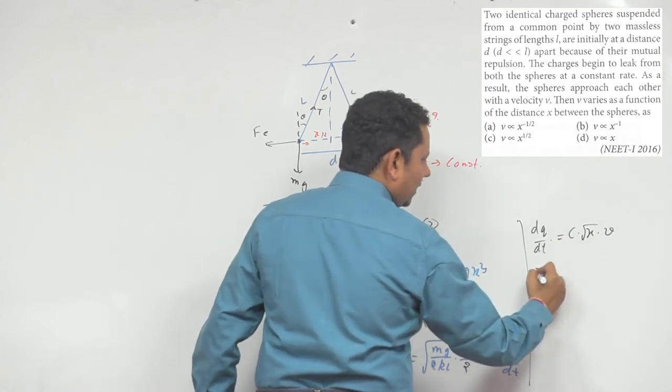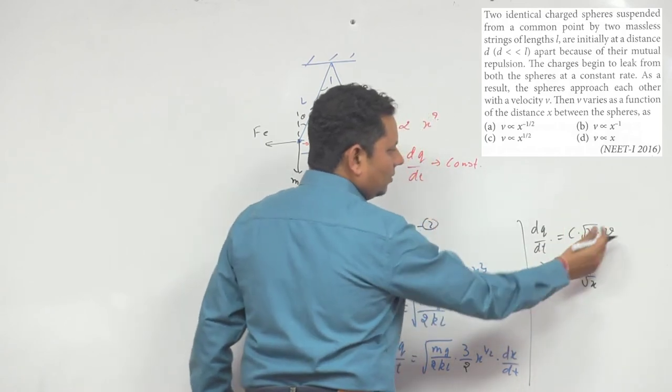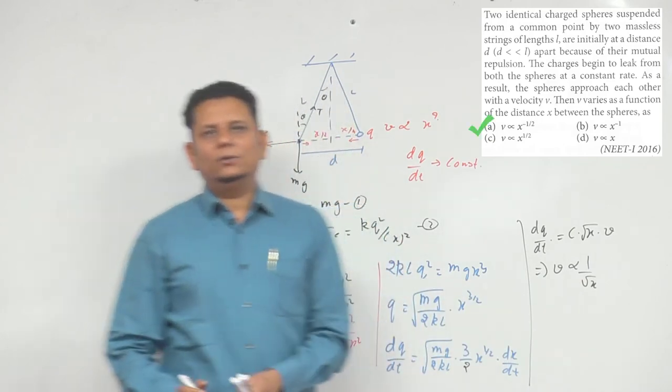This constant multiplied by under root x multiplied by velocity. Because left hand side is constant, this implies v will be proportional to 1 by root x. So v is proportional to 1 by root x.